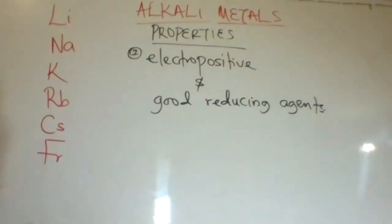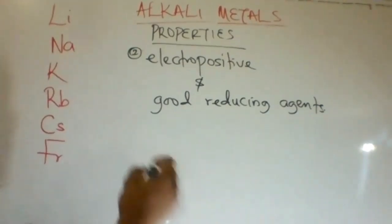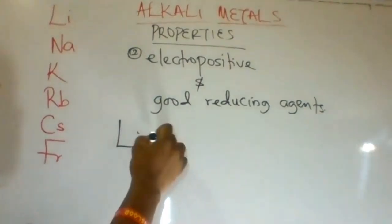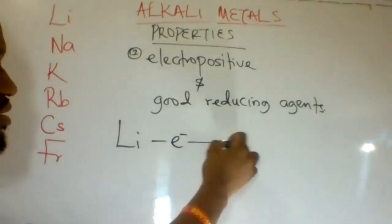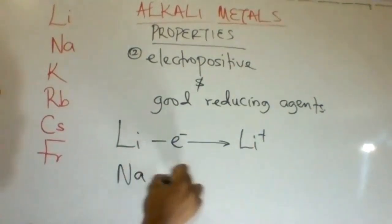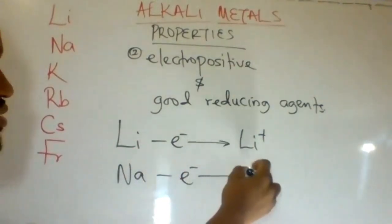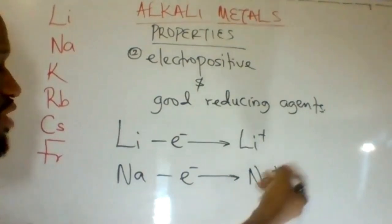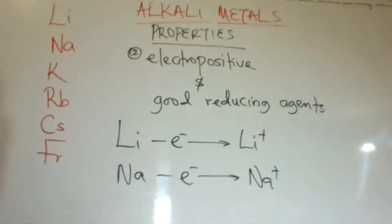Alkali metals are electropositive and good reducing agents. They easily lose electrons, making them very good reducing agents. Lithium loses an electron to form lithium ion. Sodium can also lose an electron to form sodium ion. The ease with which alkali metals lose electrons makes them electropositive and very good reducing agents.